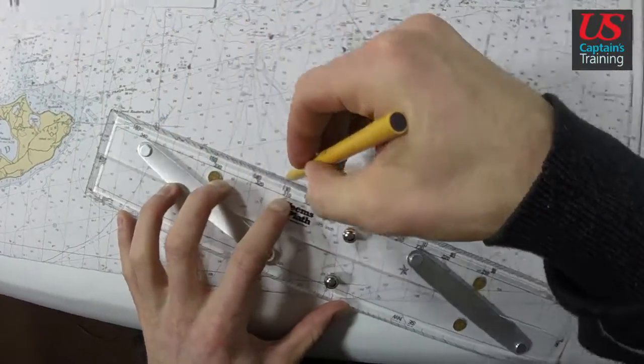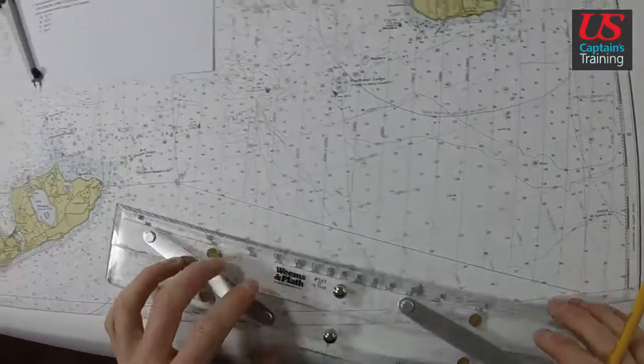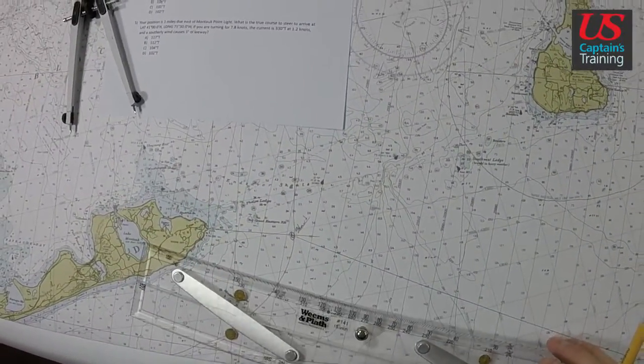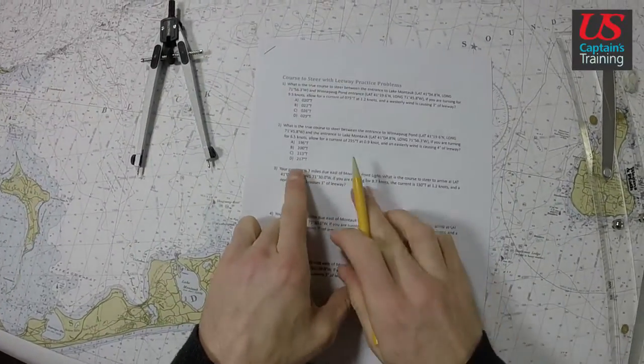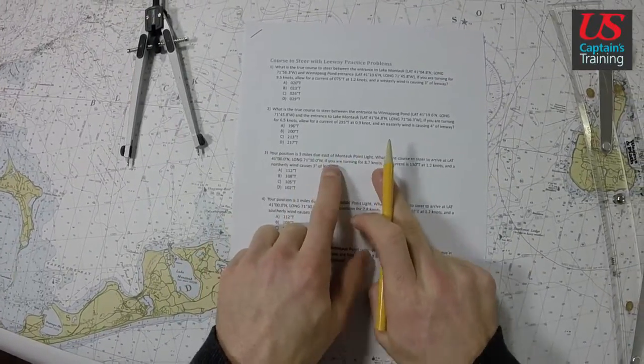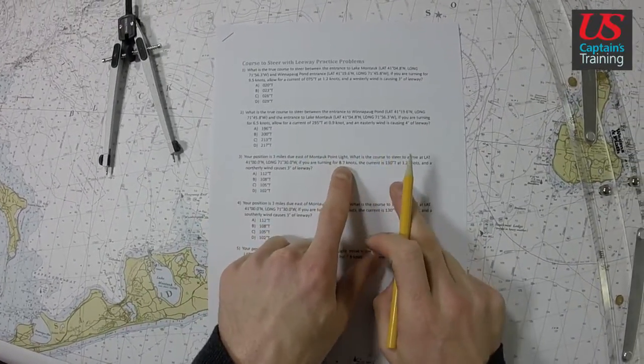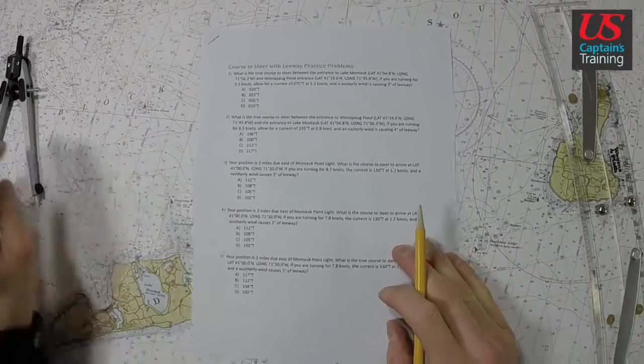We want to make this course good, but a current is affecting us so we have to account for that current. We found our start three miles east, we found our end at this latitude and longitude. Our speed is 8.7 knots.